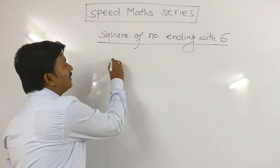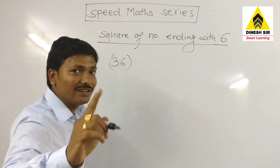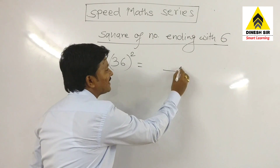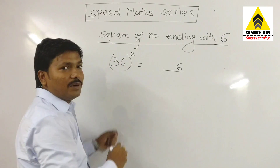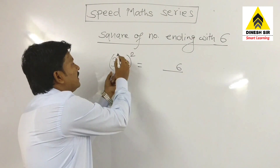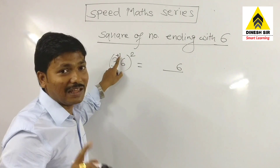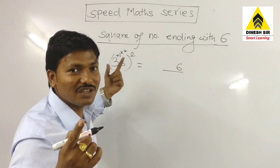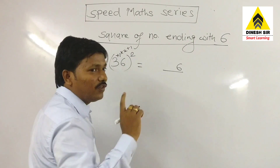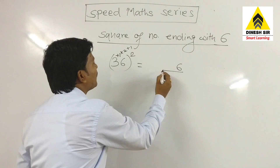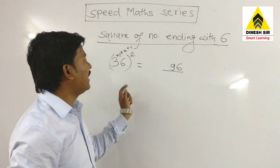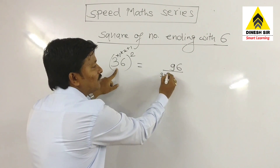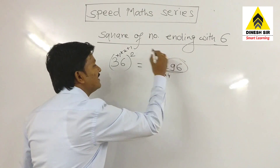If we have a number 36, which is ending with 6, and we want to take its square: write 6 as it is. Then the number before 6 is 3. Add 1 to get 4, then double the number — 4 becomes 8. Then again add 1 to 8, we get 9. So write 9. Now the first number is 3, the conjugate number is 4. Multiply 3 with 4: 3 fours are 12. So the square of 36 is 1296.